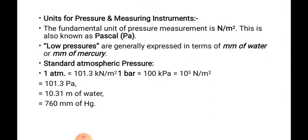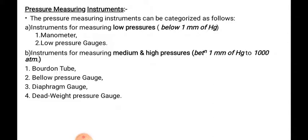The classification of pressure measuring instruments: pressure measuring instruments can be categorized on the basis of low, medium, and high pressure. For low pressure measurement, the instruments are manometers and low pressure gauges — including simple manometers, inverted manometer, and pitot tube. For medium and high pressure, the range is between 1 mm of Hg to 1000 atmospheres.